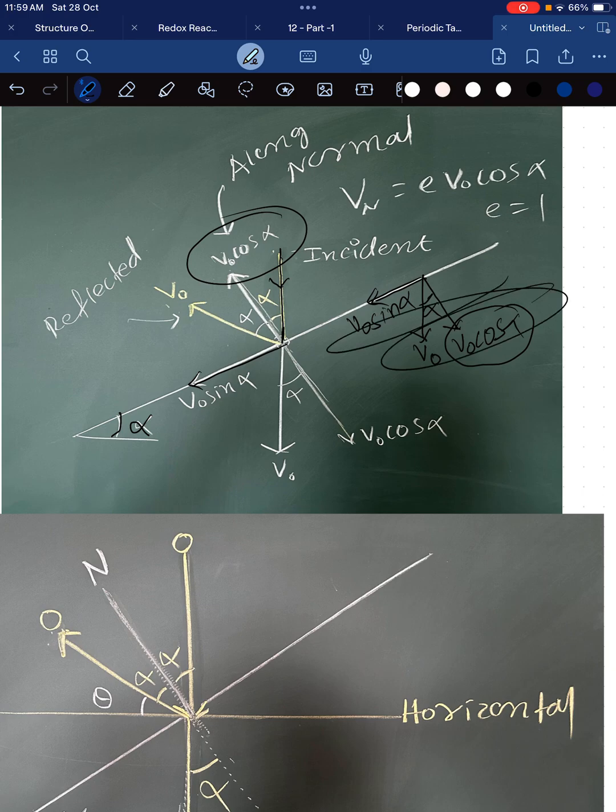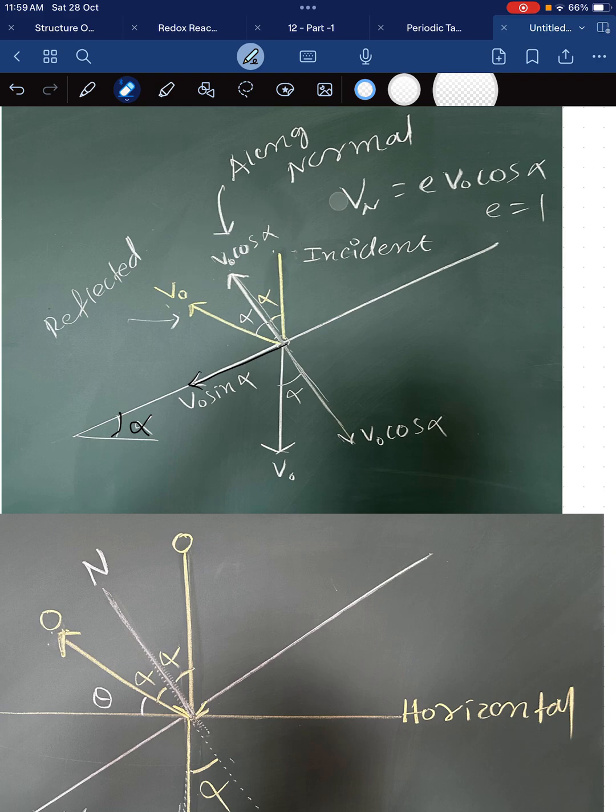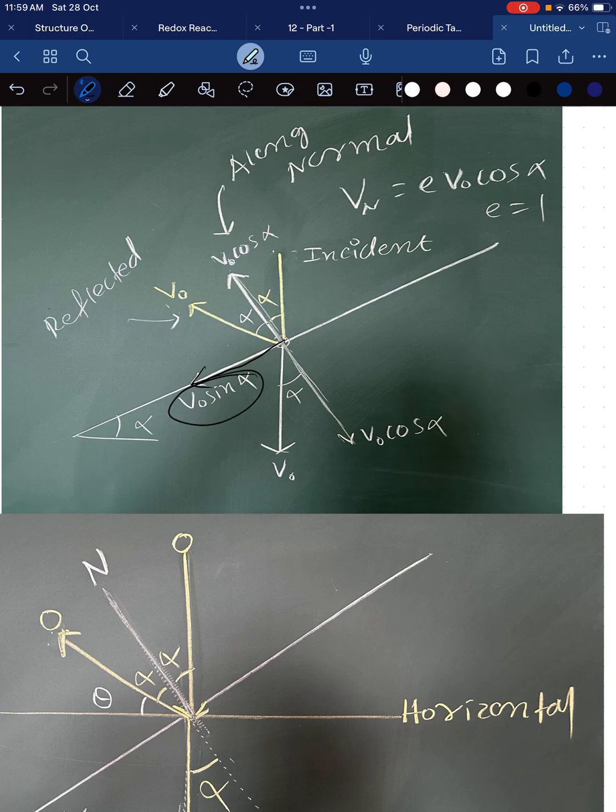Now, we will find the resultant of these two velocities. Here we have one velocity parallel to the plane which will not be affected, which is v naught sin alpha, and another velocity which is v naught cos alpha is also not affected, because e is 1.